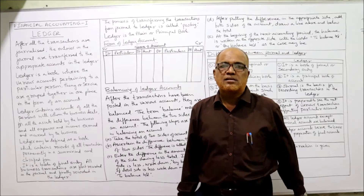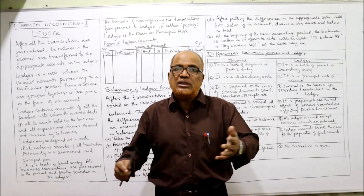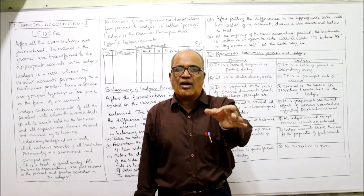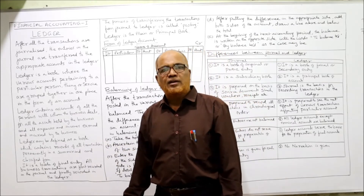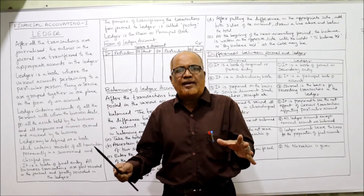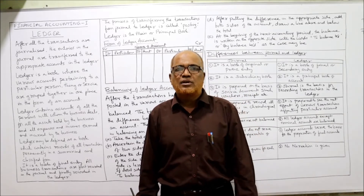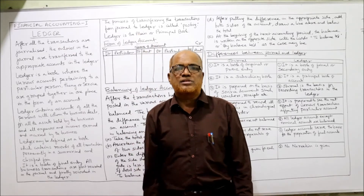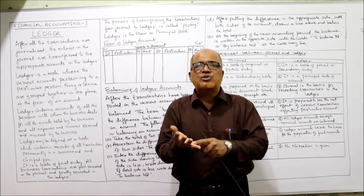Similarly, for all assets held by the business — apart from persons, a business holds assets like plant and machinery, furniture, equipment, computers. We open one account for each asset: machinery account, furniture account, land and building account, equipment account. Thirdly, for all expenses and incomes — salary, rent, printing and stationery, telephone, electricity bill — and incomes like interest earned, commission earned, discount earned — we open accounts for all of these.